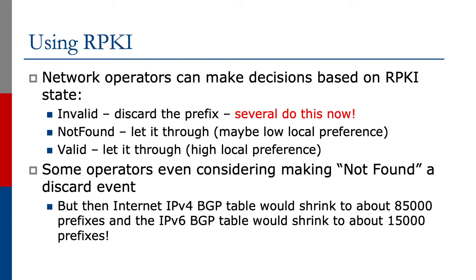The not found state is being allowed through, and perhaps you make this a low local preference. Valid — we let it through and we make it high local preference. Some operators have talked about making not found a discard event, probably not very seriously, because if they do that the internet routing table would shrink substantially in both v4 and v6.